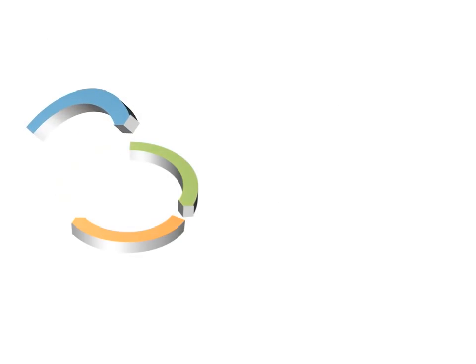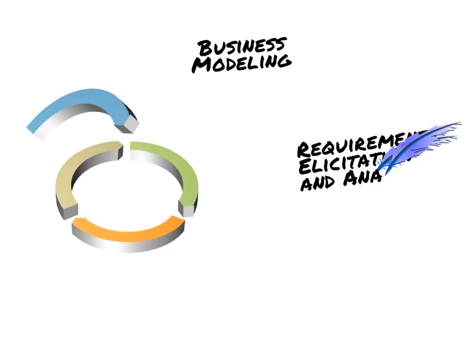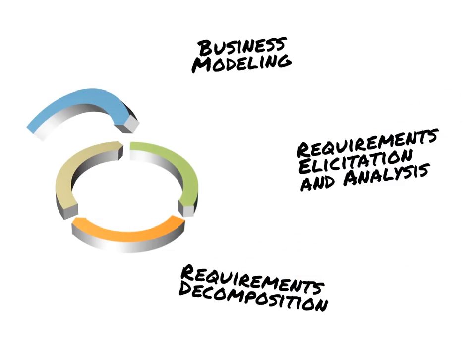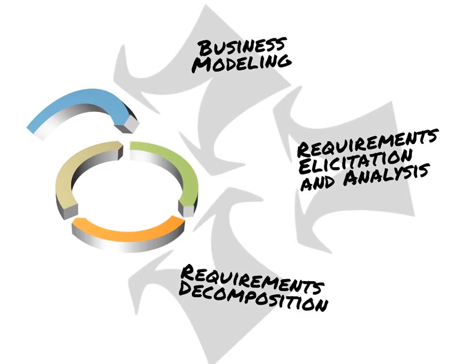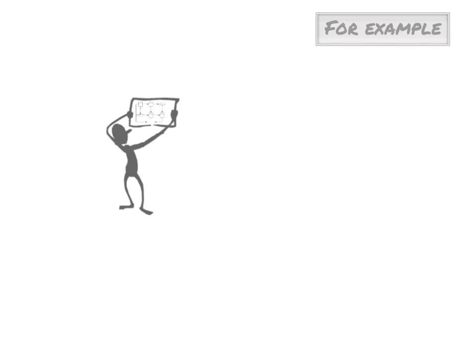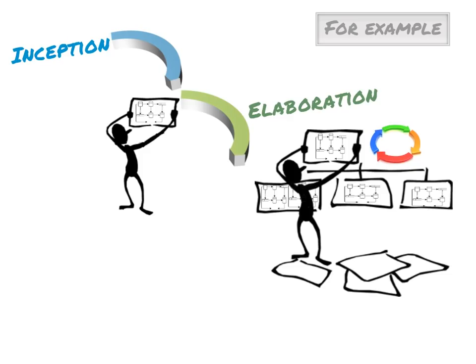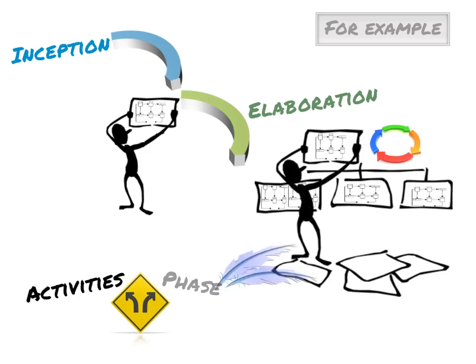Typical business analysis activities such as business modeling, requirements elicitation and analysis, requirements decomposition, etc., cross phase boundaries. For example, it is not uncommon for a business process model to be initiated during the inception phase at a high level, and then be decomposed incrementally during the elaboration phases over a series of iterations. Separating activities from phases is one of the hallmarks of the iterative approach.